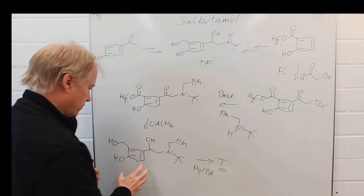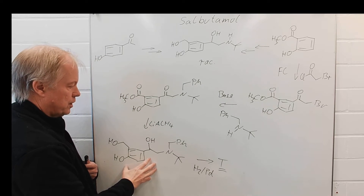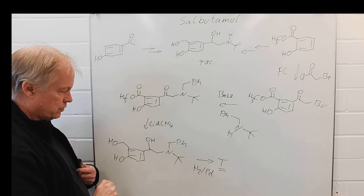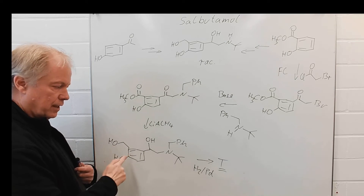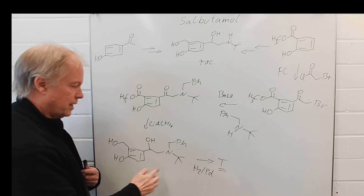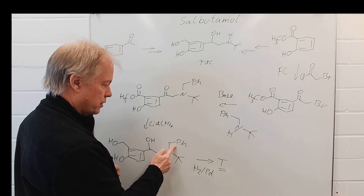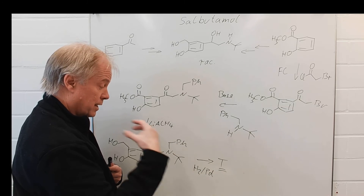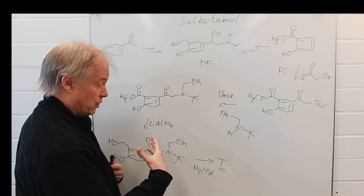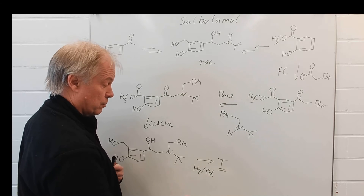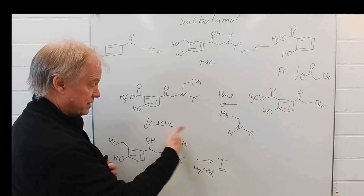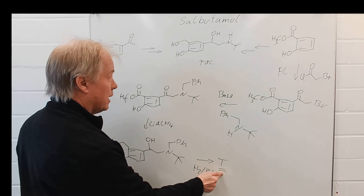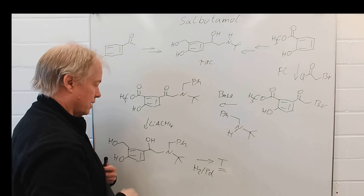With one step we change both carbons in their oxidation state. Then it's just one final step to remove the benzoyl protecting group: hydrogenation on palladium on charcoal, which eliminates the benzoyl group, and we arrive at the target molecule — salbutamol.